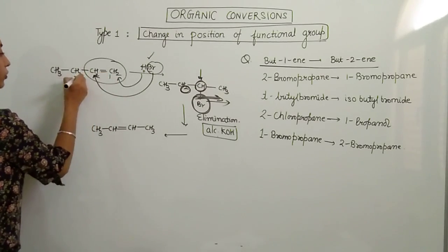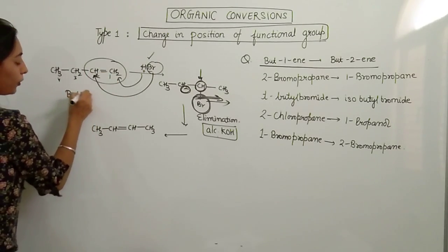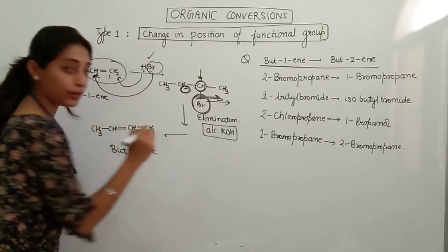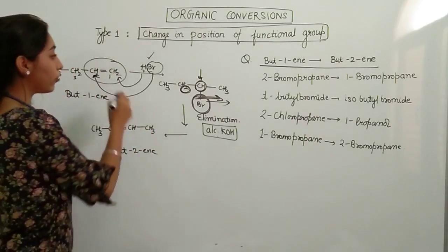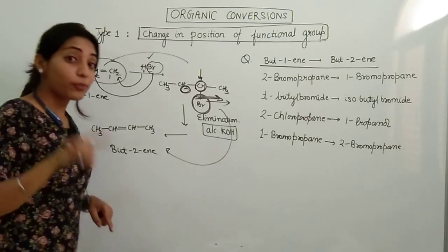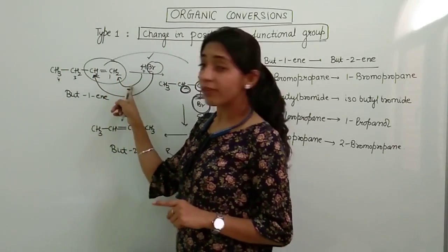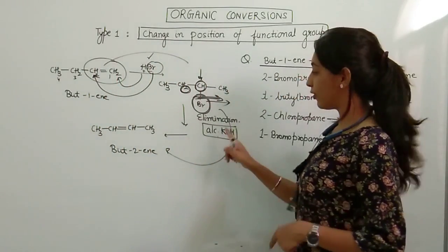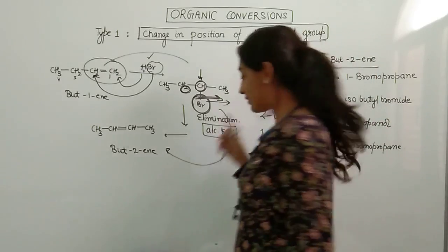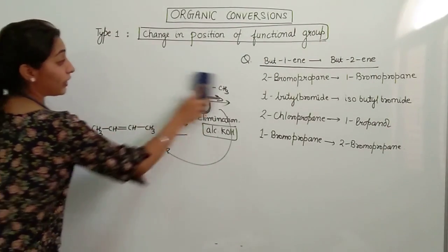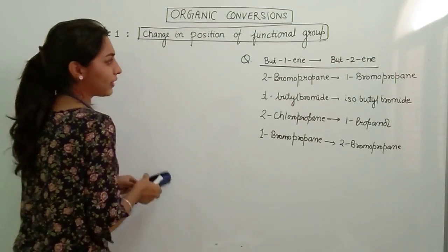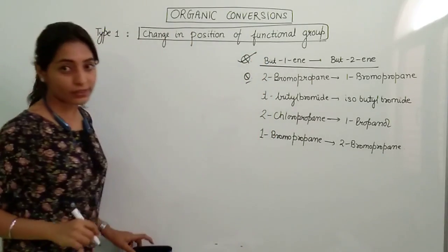See? We started with But-1-ene and we ended up with But-2-ene. So the only thing we have to follow is: first you have to remove the double bond and then you have to create the double bond again. To remove the double bond you have to do Markovnikov's addition and to create the double bond you have to do alcoholic KOH. Done with the first question. Let's move to the second question.